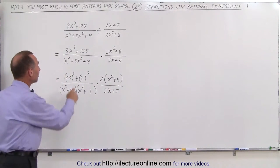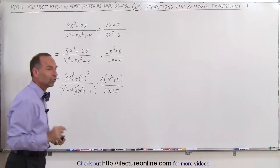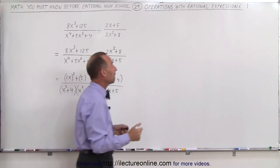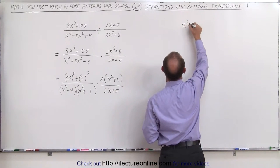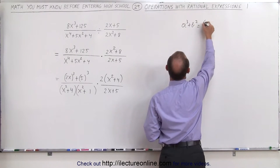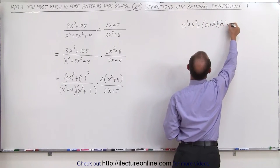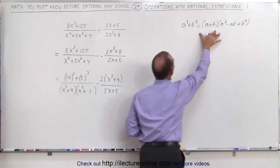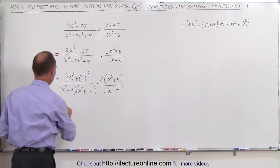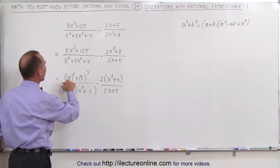One more thing we need to do is factor this numerator. Now we can clearly see that it's the sum of cubes, and if we remember right, what we'd have to do with the sum of cubes, is that a cubed plus b cubed is equal to the quantity a plus b times a squared minus ab plus b squared. So knowing that, we can apply that to the numerator here, and this can now be written as a plus b. Notice that in this case,